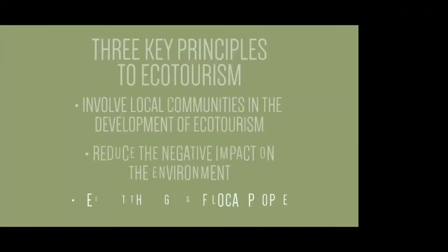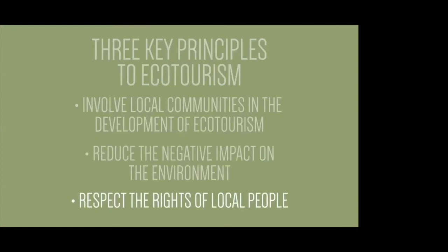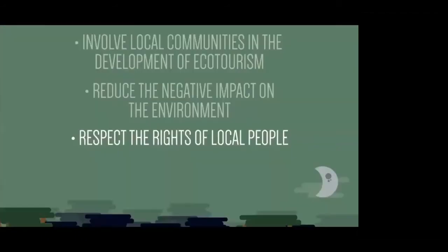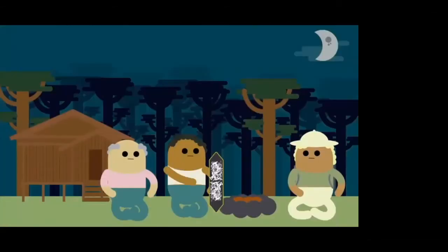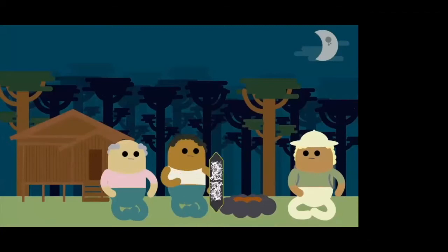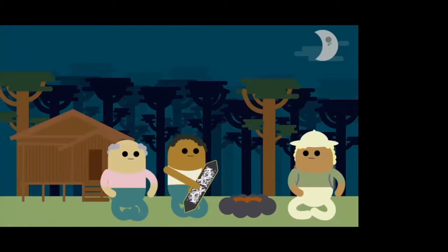The third principle is to respect the rights of local people. Many tourists visit a location in order to learn about local cultures and traditions. The people with the greatest knowledge about a destination are the people who actually live there, and ecotourism ventures should be managed by local communities using their experiences and expertise to promote local cultures and traditions.